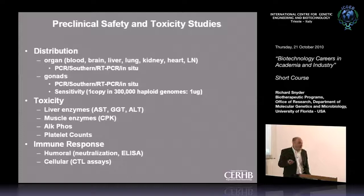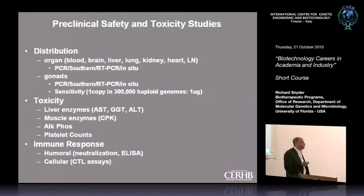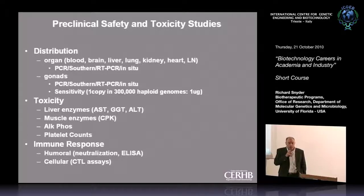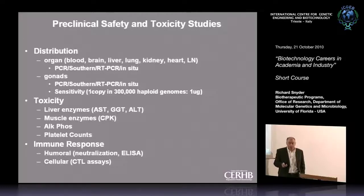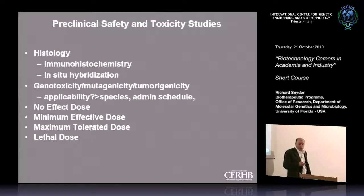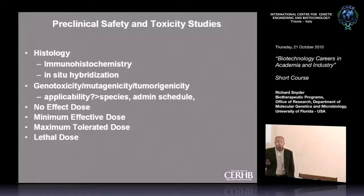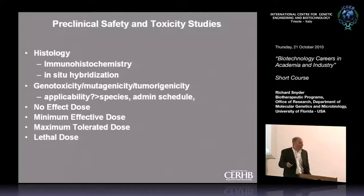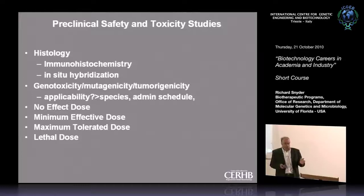What parameters do you look for in toxicology studies? For gene therapy, you're looking at biodistribution of the vector in various organs and gonads, toxicity levels such as liver and muscle enzymes, immune responses, histological analyses of various organs, and genotoxicity. You're trying to determine a dose with no effect, a minimum effective dose where you have some marker of efficacy, the maximum tolerated dose, and the lethal dose.